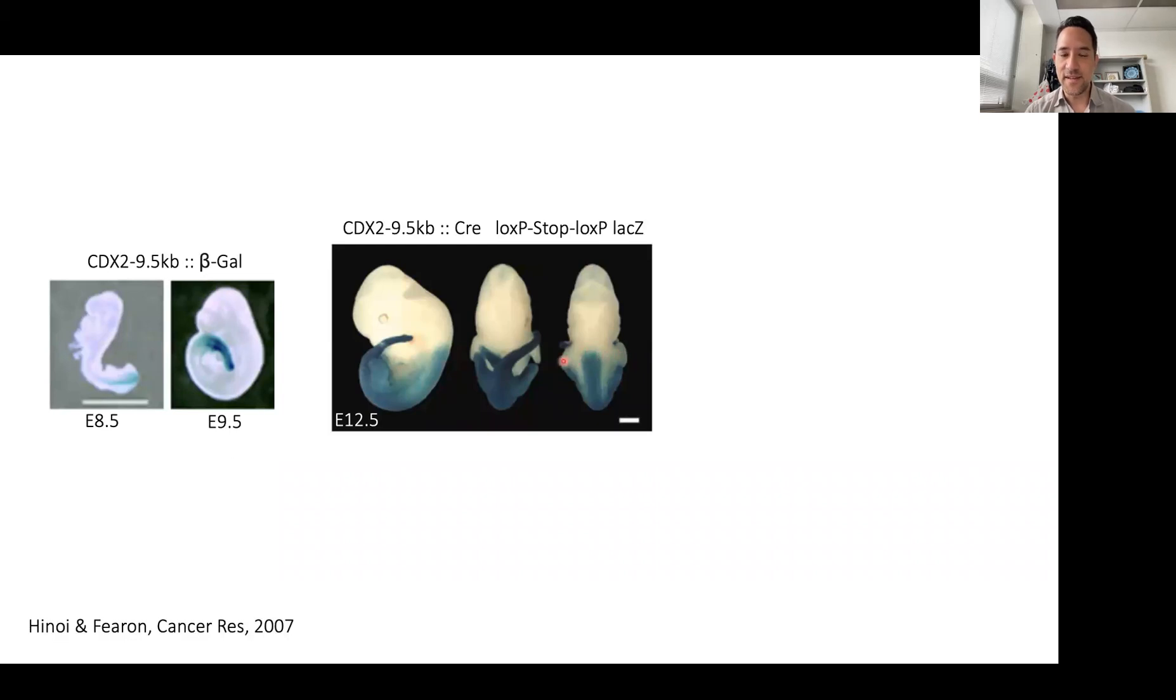starting at about this limb level, you could see labeling of the posterior spinal cord and its adjacent lateral neural crest cells.